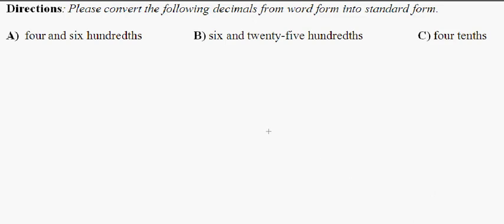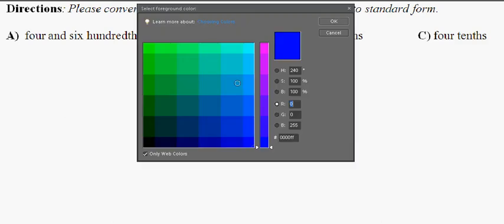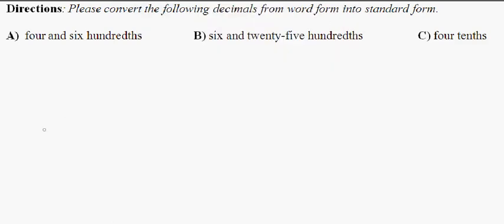So first up, I've got to go back and choose a color. I'm going to go back to trusty old blue. Letter A, four and six hundredths. So automatically, I see the 'and', and I think to myself, that's going to be a decimal point. Four and. Well, I see four and six hundredths. So I'm going to underline that.